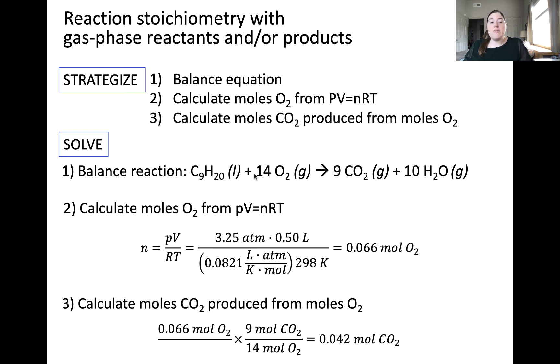You can see that the coefficient in front of oxygen for the balanced equation is 14, and the coefficient in front of carbon dioxide is 9. We'll use this 14 to 9 ratio with moles of oxygen in the denominator so that units cancel appropriately. This yields a result of 0.042 moles of carbon dioxide that would be produced from the starting quantity of oxygen and excess nonane.